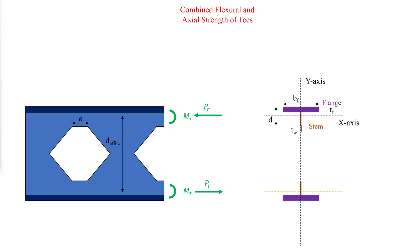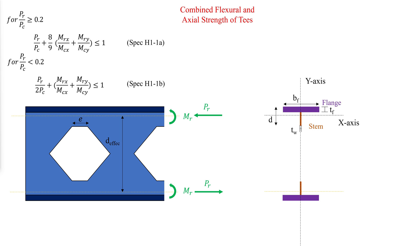The interaction of flexure and axial forces in top and bottom Ts, constrained to bend about a geometric axis X and/or Y, is limited by AISC specification equations H1-1A and H1-1B, where PR and MR are the required axial and bending strengths, respectively, and PC and MC are the available axial and bending strengths, respectively. The available strengths are the minimum calculated reduced strengths based on the previously shown calculations.